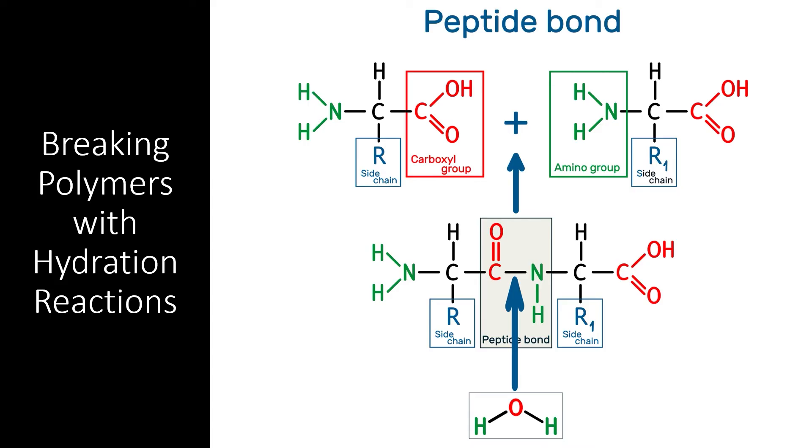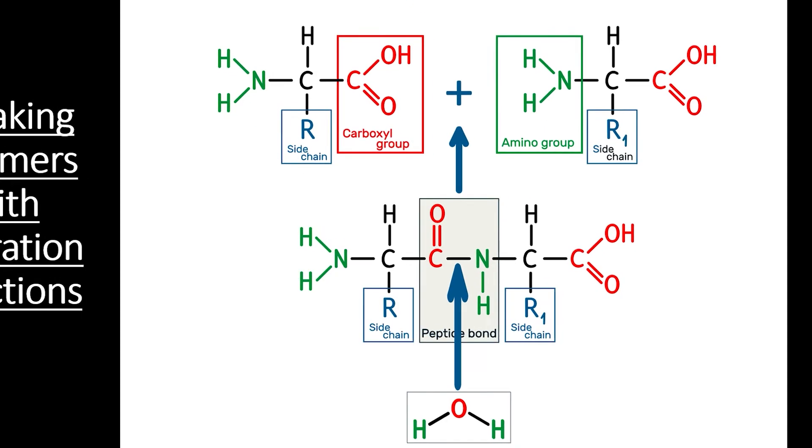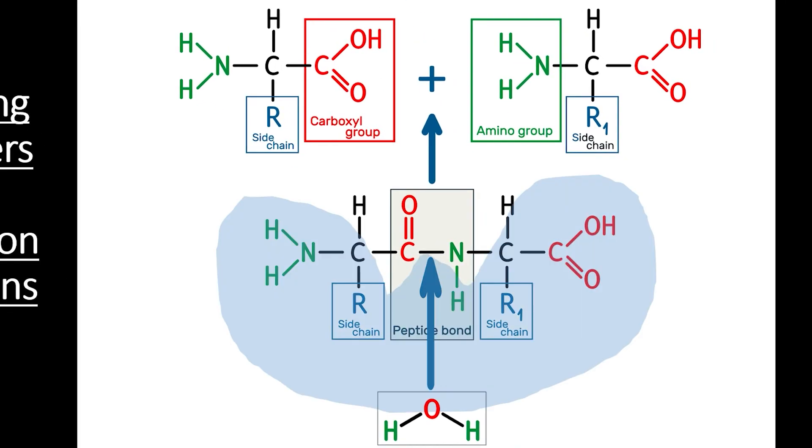If a dehydration reaction is what forms polymers, then it should make sense that a hydration reaction is needed to break a polymer. In a hydration reaction, an enzyme typically puts stress on the covalent bond holding two monomers together. As they break, a water molecule rushes in.